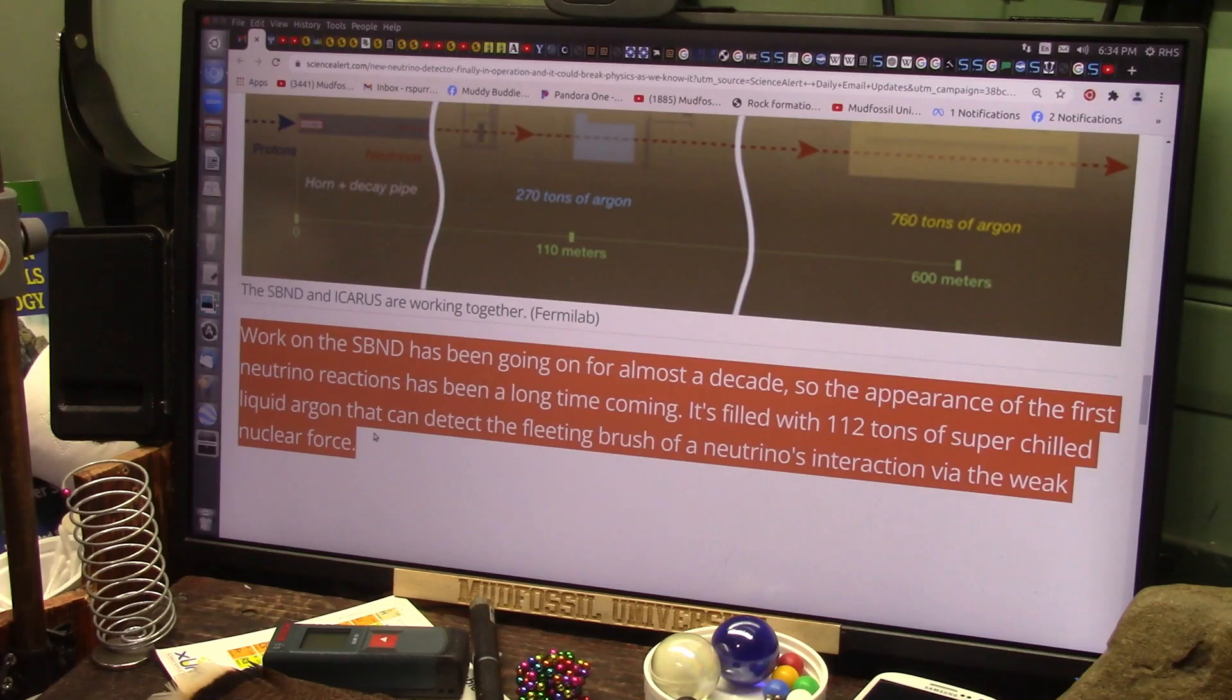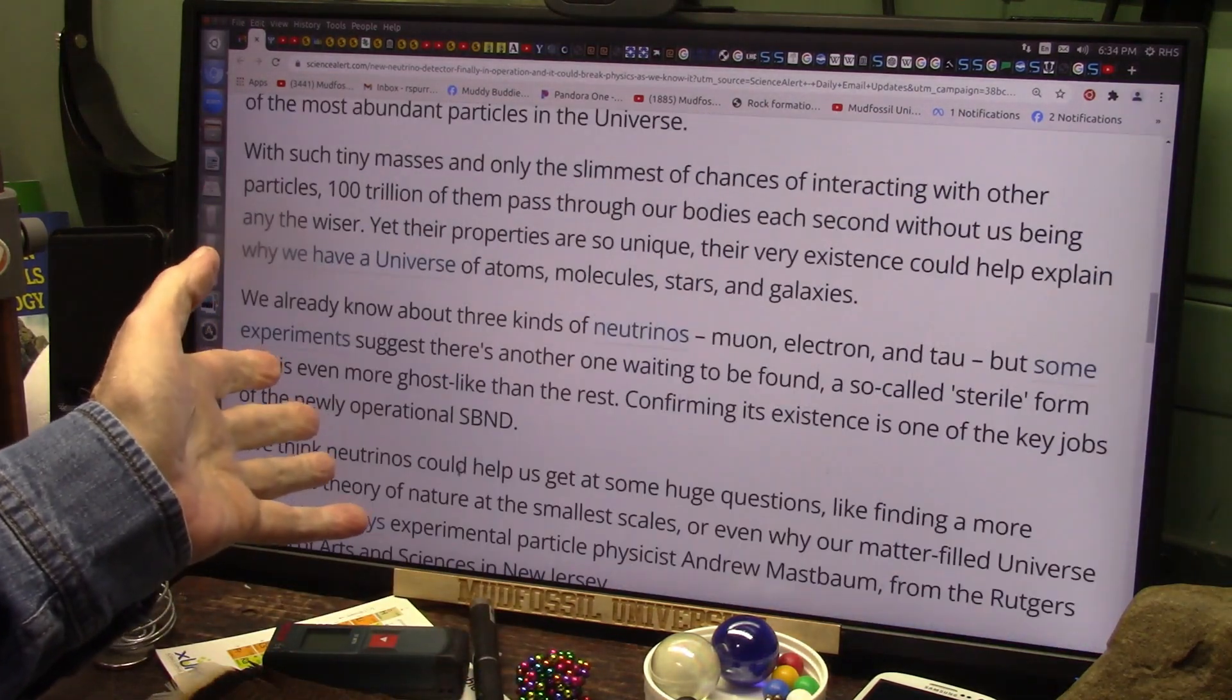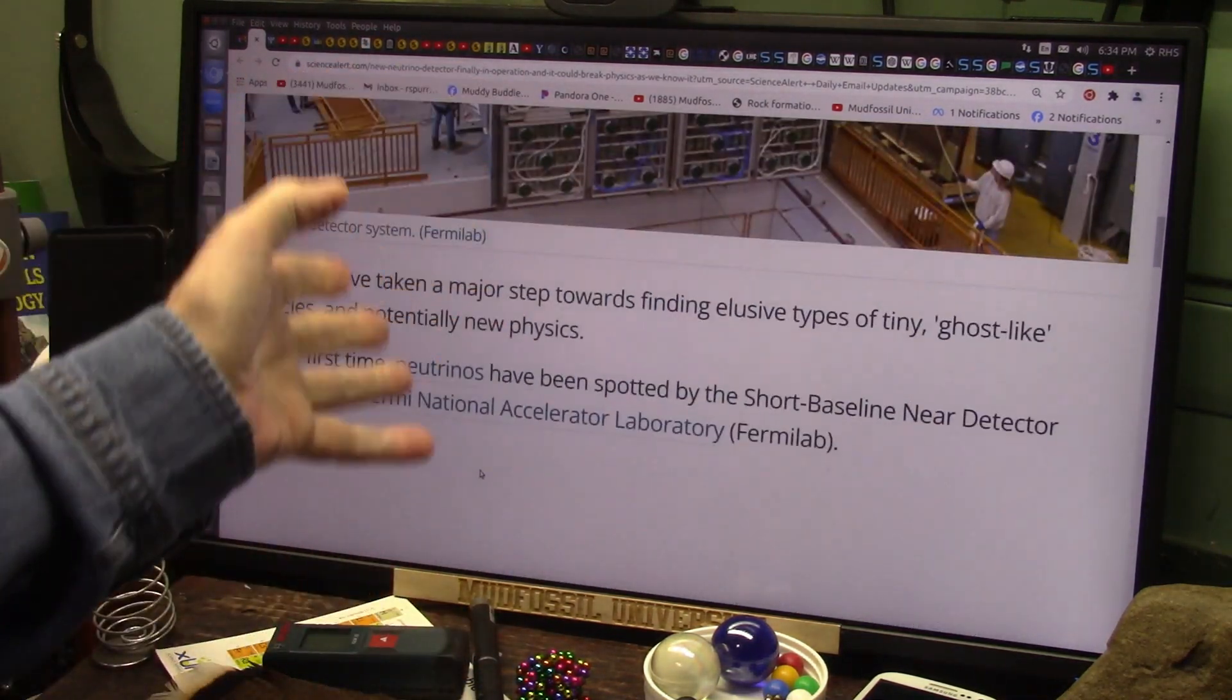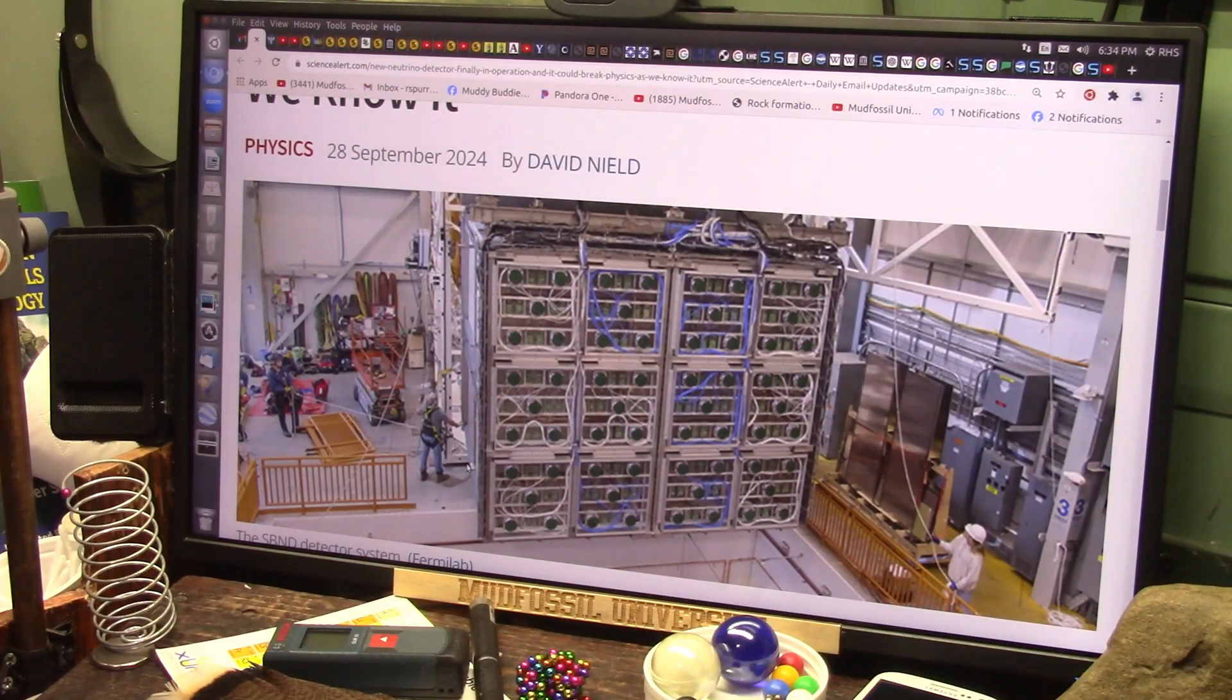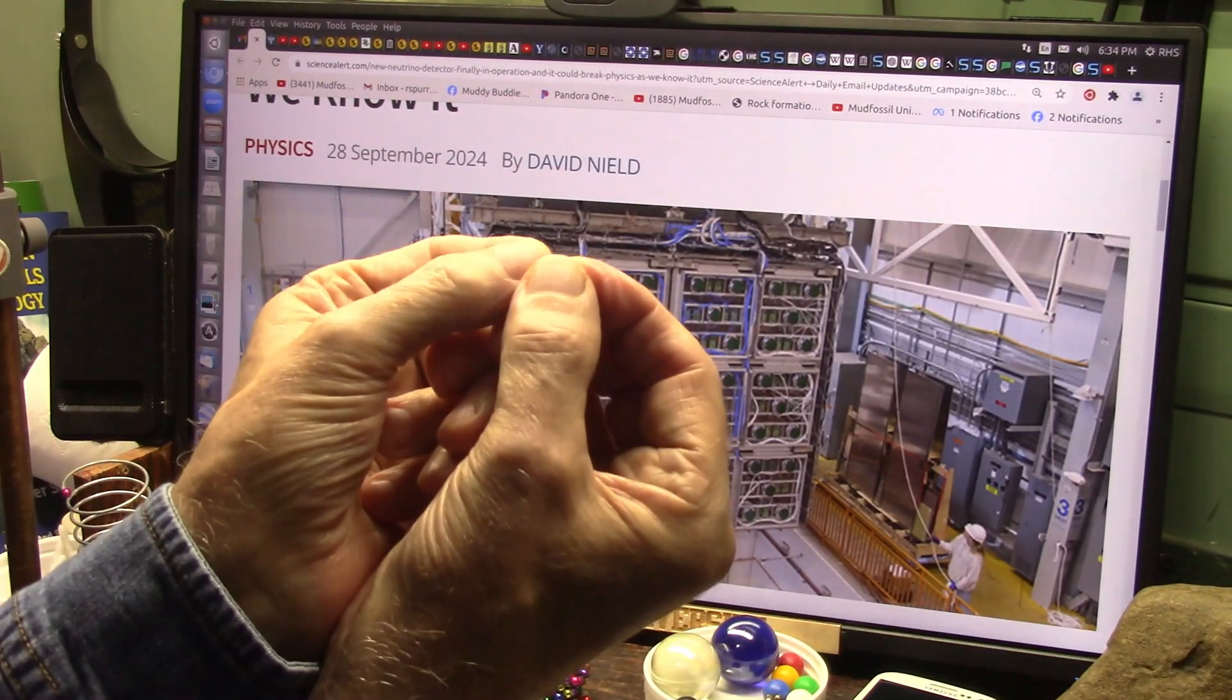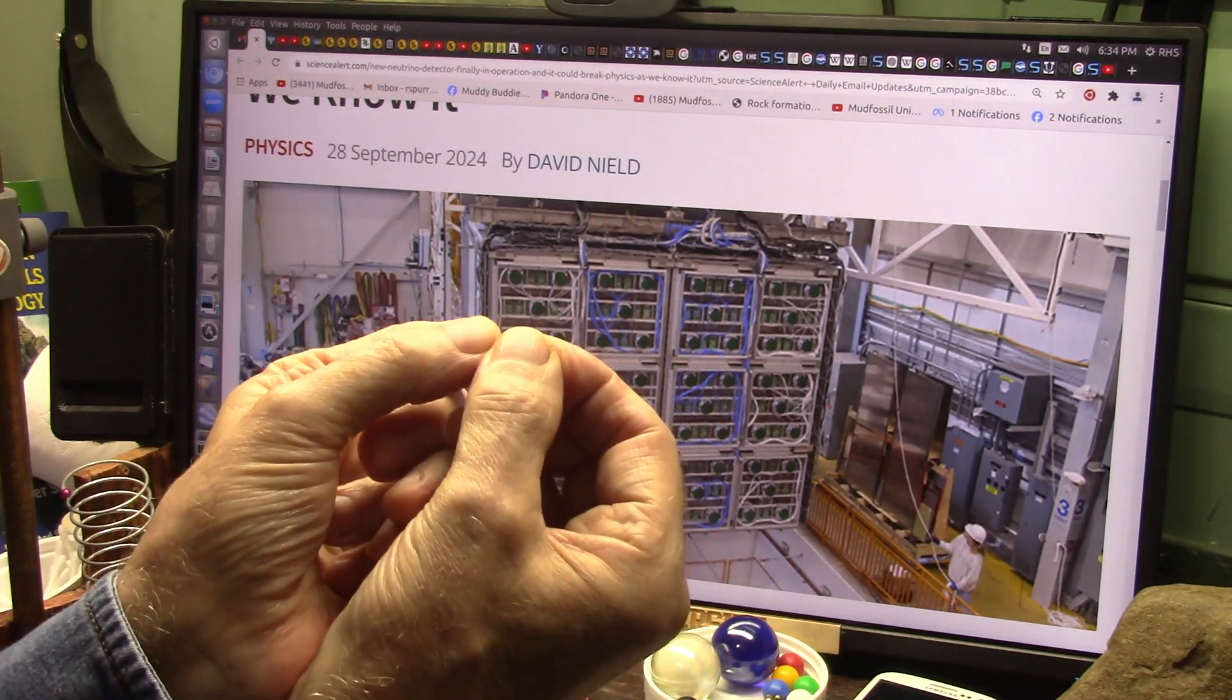Can detect the fleeting brush of a neutrino's interaction via the weak nuclear force. Virtually everything in this article is not correct. Particles don't pass through you billions a second. They say, oh yeah, they're just flowing through everything in you. No, they're attached to the light that bounces off of you - they're part of that light.